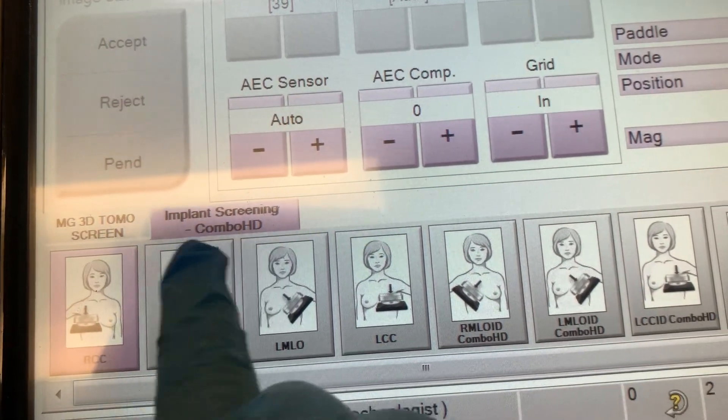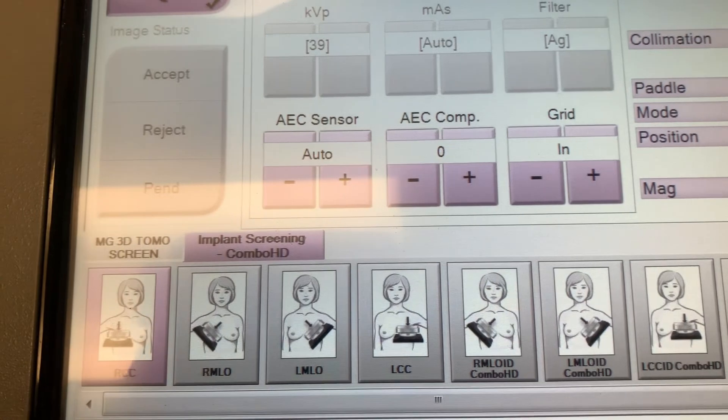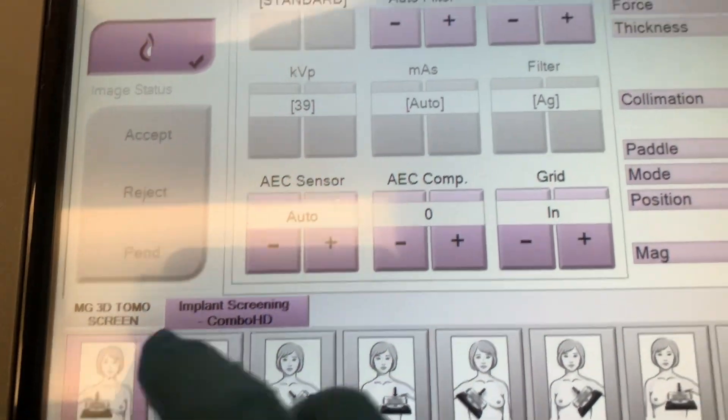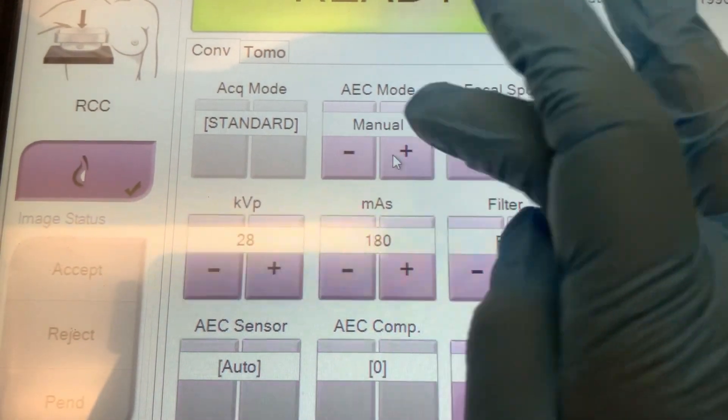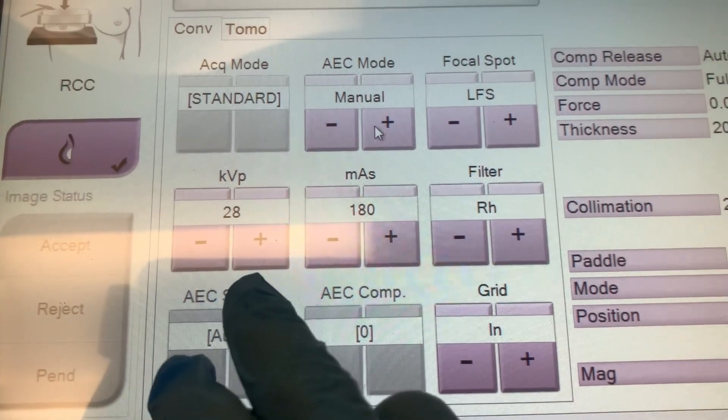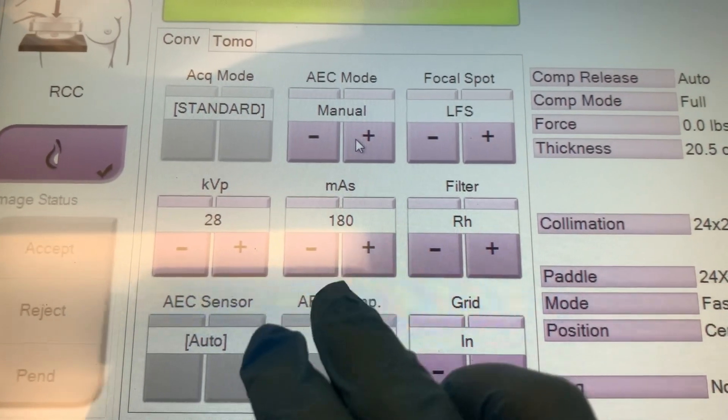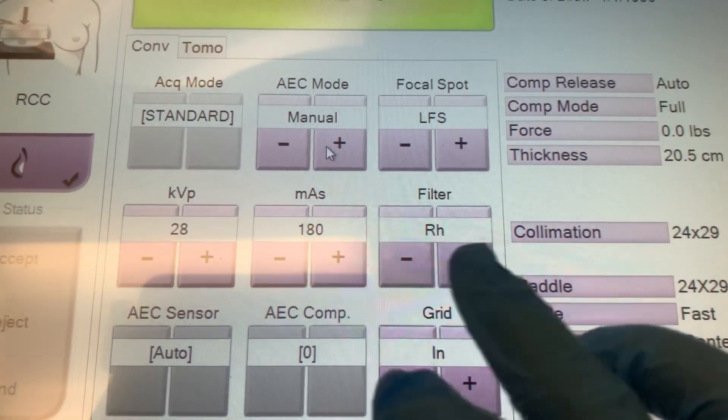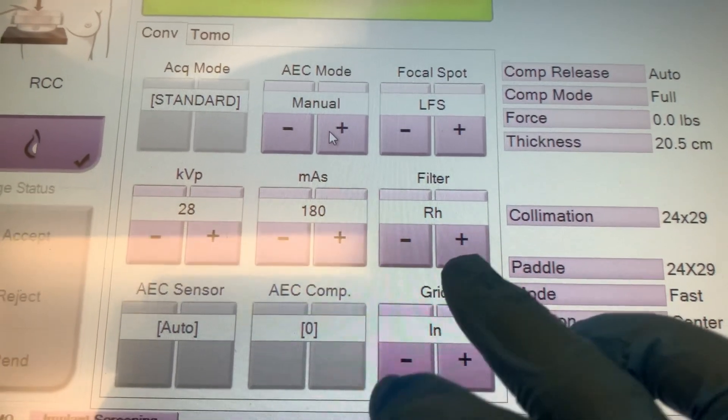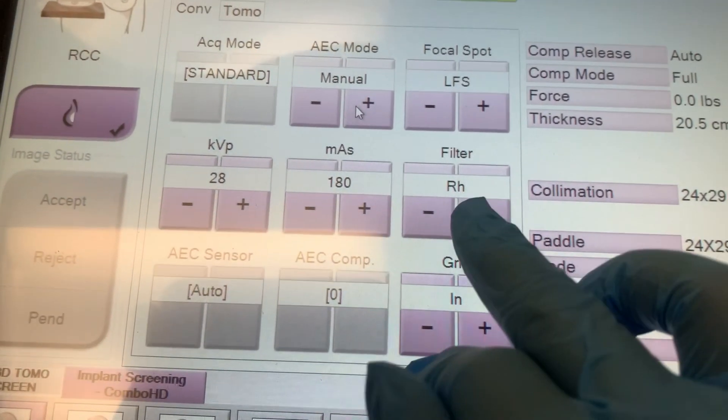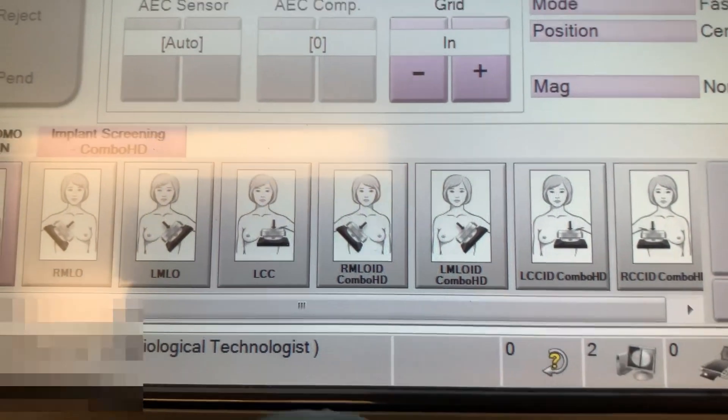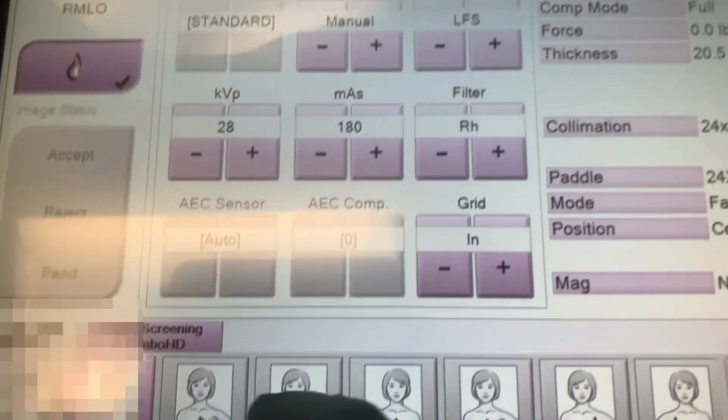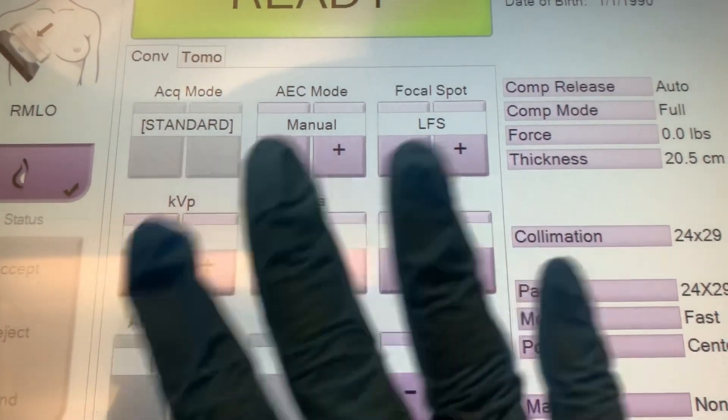And then implant option C, implant screening. So normally for CC, we do those at manual. And then that's when you can adjust your mAs if needed. And this is a different filter for this one. So you're voting on filter. And then it will stay like this.